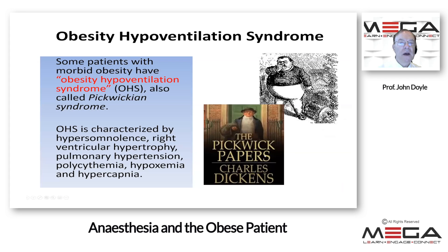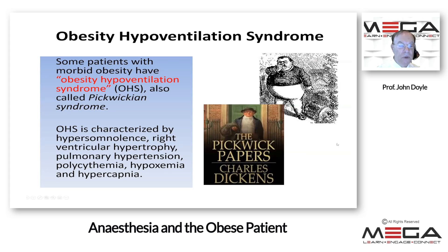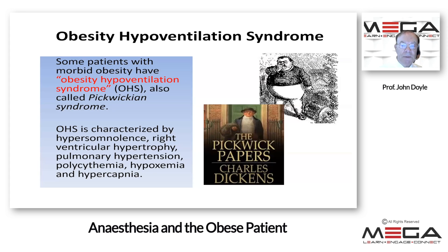Another condition you may find is obesity hypoventilation syndrome, also known as Pickwickian syndrome — named after the book The Pickwick Papers by Charles Dickens. It is characterized by hypersomnolence, right ventricular hypertrophy, pulmonary hypertension, polycythemia, hypoxemia, and hypercapnia. This is one of the reasons why venous blood gases or arterial blood gases are often recommended at patient evaluation.